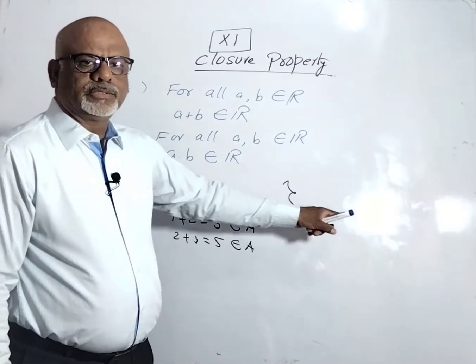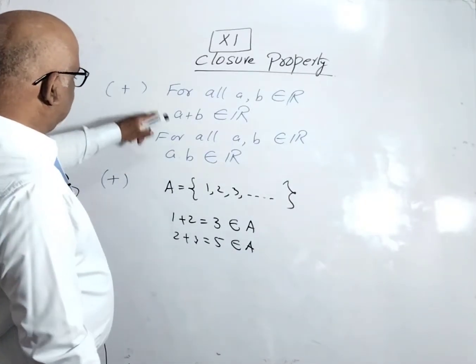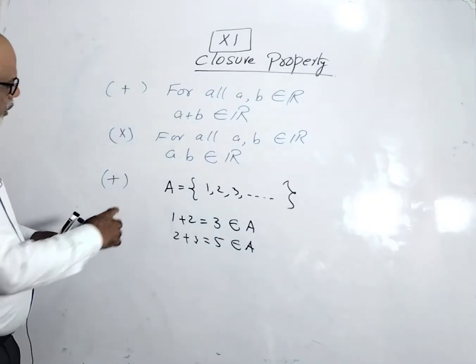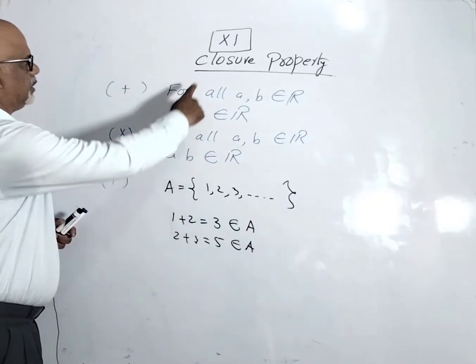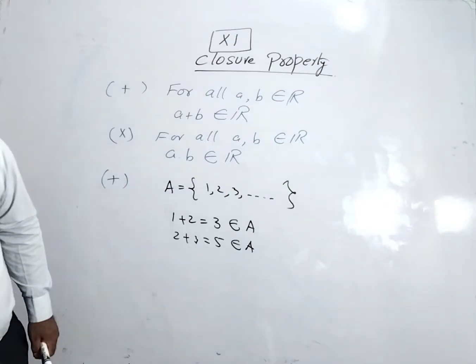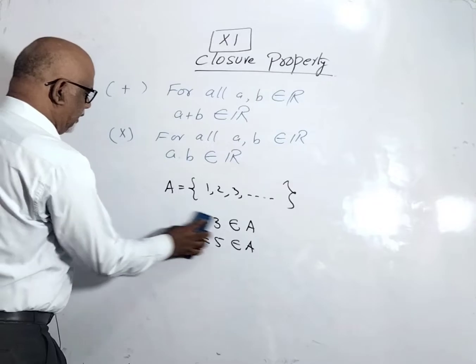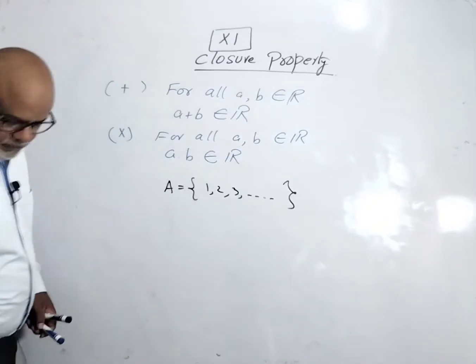that is called closure property under addition. This set is closed with respect to addition. Now we have to check under multiplication for the same set.